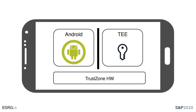TrustZone is a hardware-based technology built into ARM processors. It enables the deployment of security mechanisms present in most mobile devices. These mechanisms are assumed to be highly secure, often being trusted with cryptographic key storage and operation, and they play a major role in providing a secure data path.